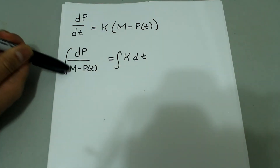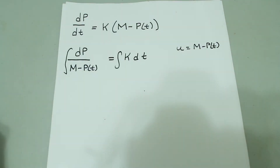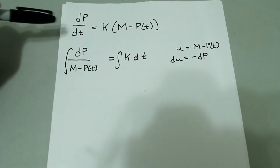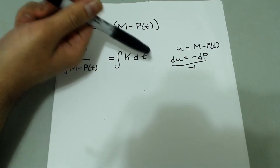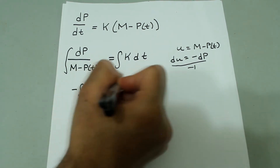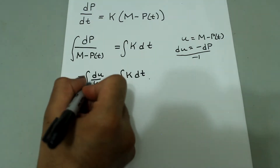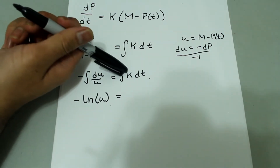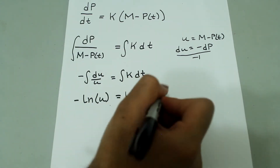I'm going to use u-substitution here. I'll say that u is equal to m minus p of t. So du with respect to p is just negative dp. We don't want negative dp, so we divide by negative 1 — negative du equals dp. So we'll have negative integral of du over u equal to integral of k dt. This gives us negative natural log of u equal to kt plus an arbitrary constant c.